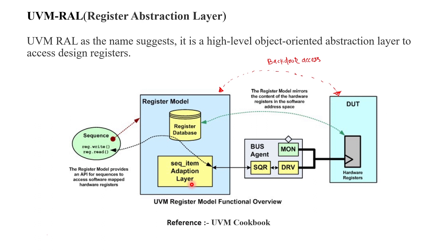The register database is an exact mirror image of the DUT registers and memories — an exact copy. So if our DUT consists of five registers and five memories, the register database will also consist of five registers and five memories. The responsibility of the adapter layer is to convert the register sequence into the bus sequence and vice versa.